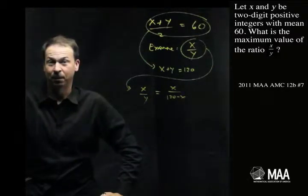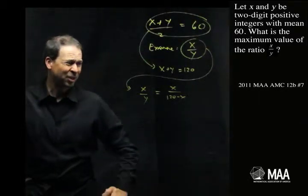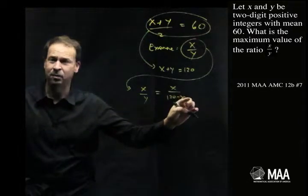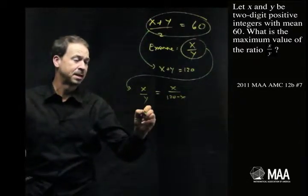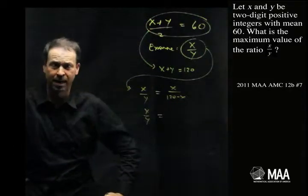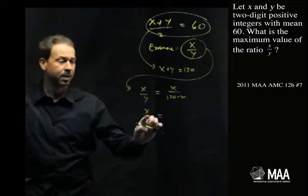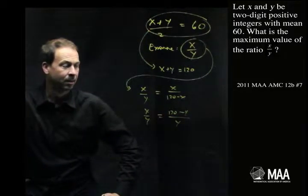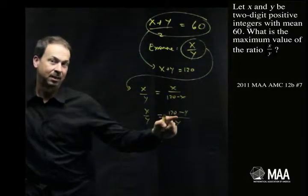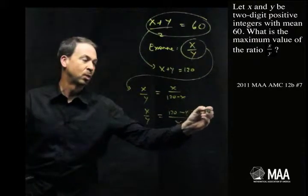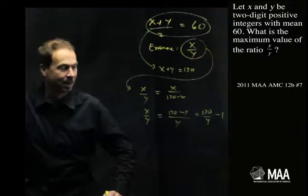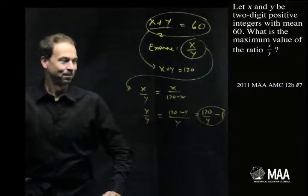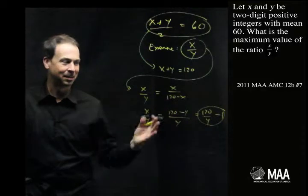Actually, I don't like complicated denominators. Let's do this in a different way — instead of focusing on x, let's focus on the variable y. So x over y is 120 minus y, all over y, which simplifies to 120 over y minus 1. That doesn't look too bad. That was flailing, and that was the success of flailing.